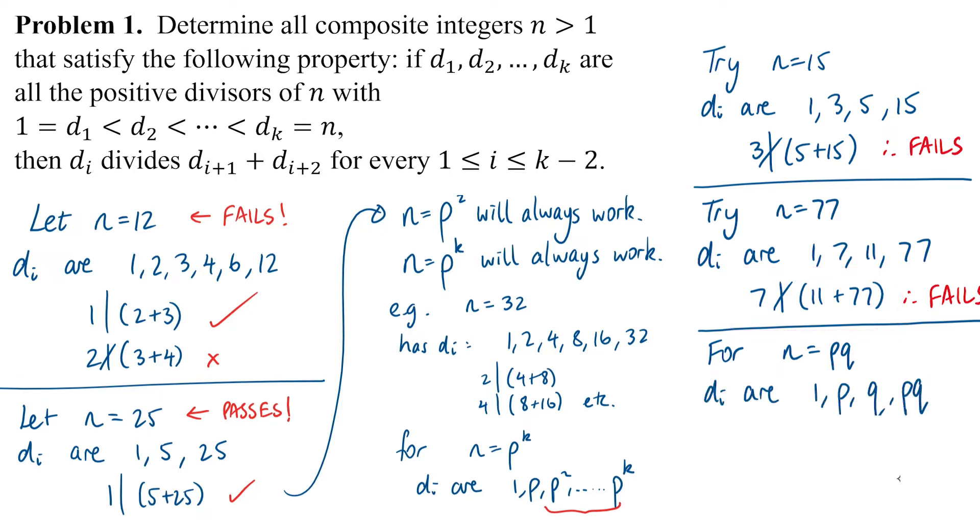This is the source of the contradiction because if 7 were to divide the sum, it would need to divide into 11. In general if we have divisors p and q, listing them in order we'd have 1, p, q and pq. If the sum q + pq were a multiple of p, that would mean q would also need to be a multiple of p, which cannot happen because p and q are prime.